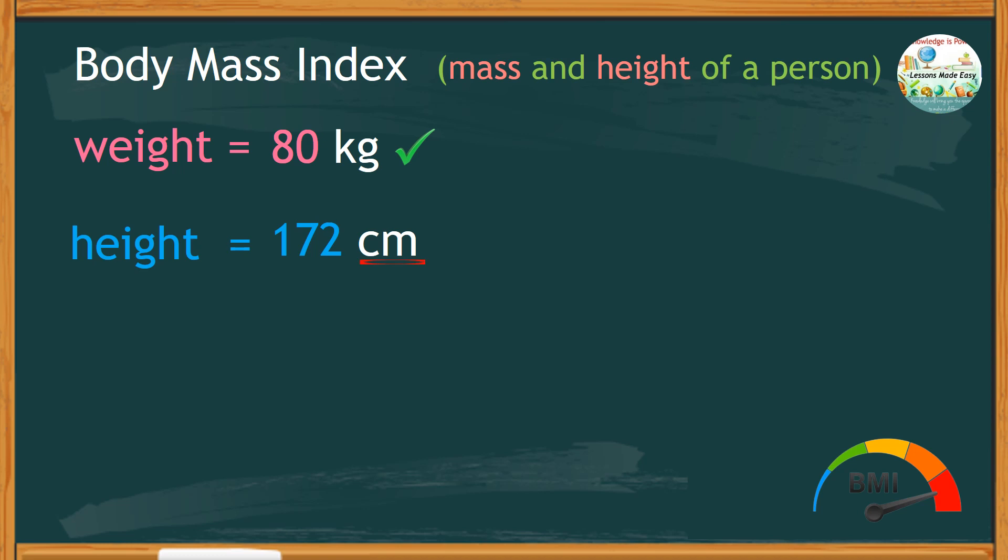However, the height is in centimeters, so we need to convert this unit to meters. Since there are 100 centimeters in 1 meter, therefore, 172 centimeters would be equal to 1.72 meters.